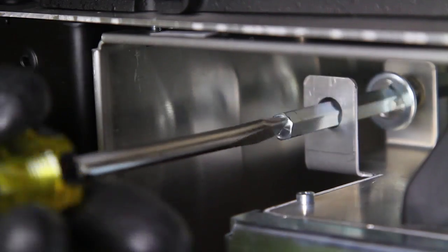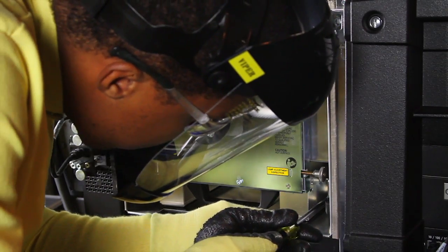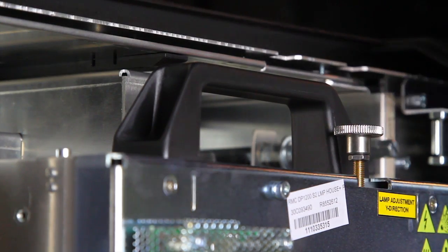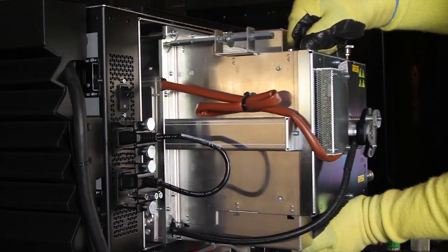Loosen the three captive screws that hold the lamp housing in place. Grasp the lamp housing by the twin handles at the top and bottom and carefully slide the entire housing out of the projector.